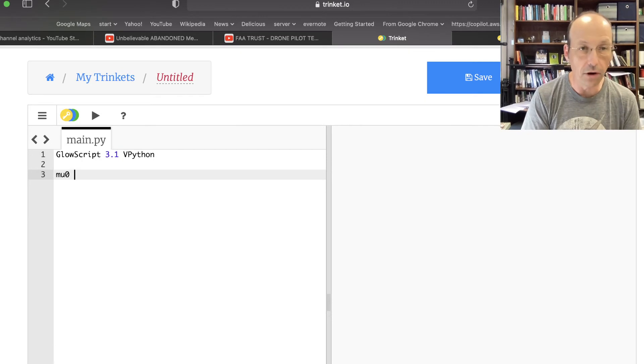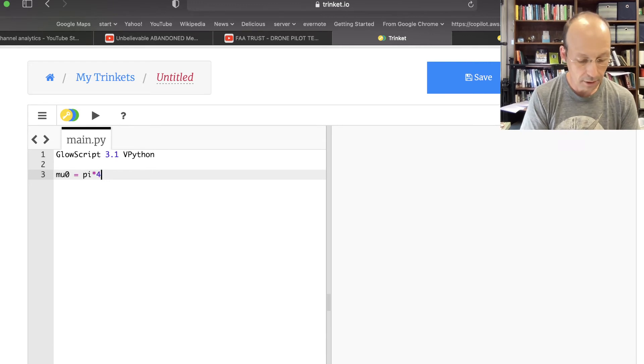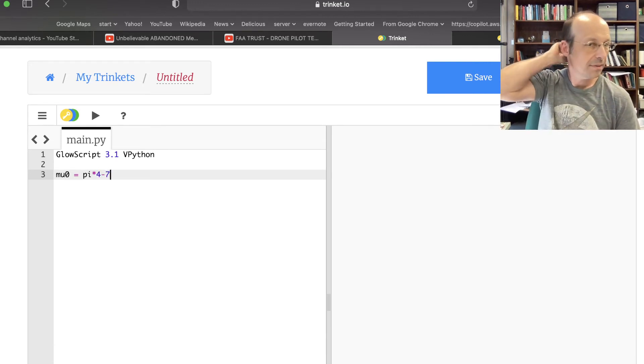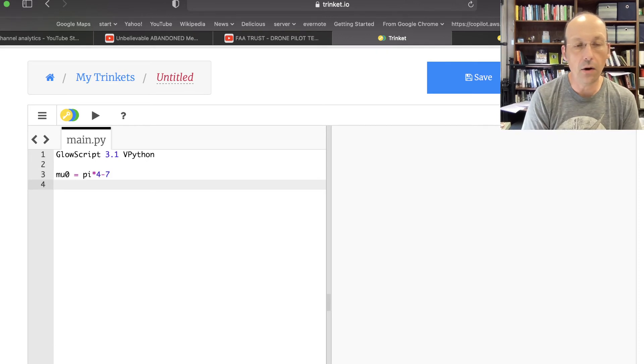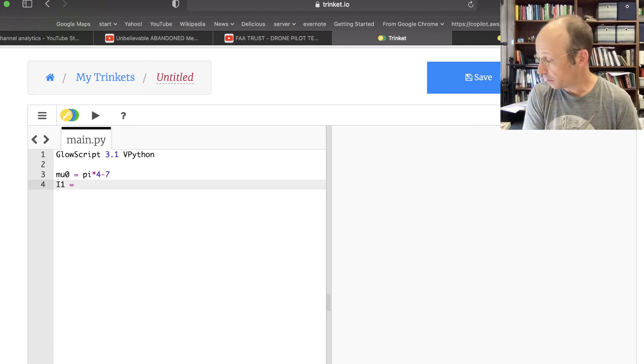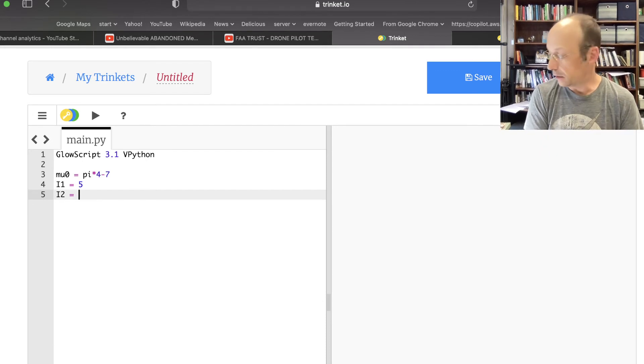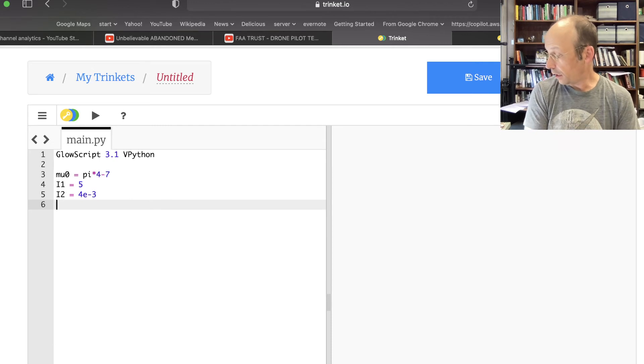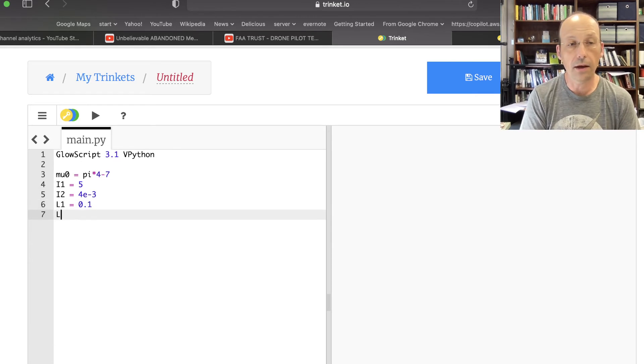So let's start entering the stuff that we have. mu 0 is 4 times pi times 10 to the negative 7th. I1 was 5 amps. I2 was 4 milliamps, so 4 times 10 to the negative 3. L1 is 10 centimeters, 0.1 meters. L3 is the same. R1 was 0.03 meters, 3 centimeters away. R2 was 8 centimeters, 0.08.